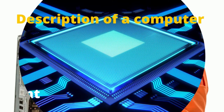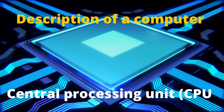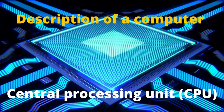We'll be talking about the Central Processing Unit, or CPU. This can be said to be the most important part of a computer — it may be called the brain. Just as humans have a brain, computers have the CPU, which is the Central Processing Unit. All the work is done here.